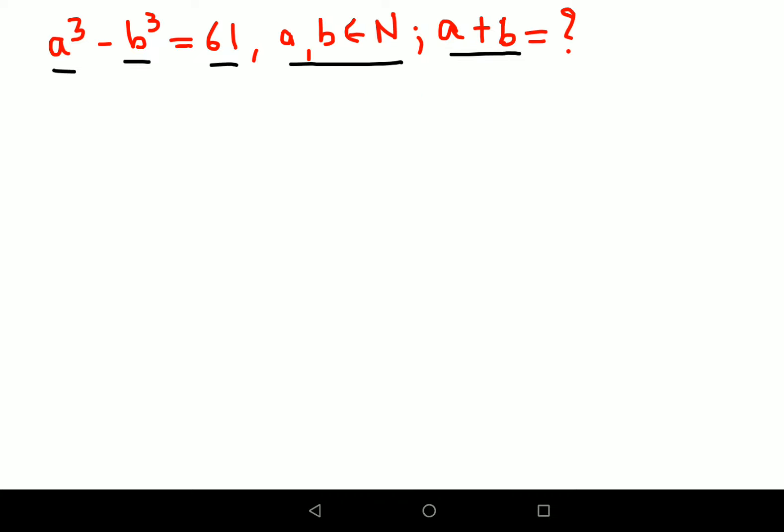So here let's try and do the expansion of a cube minus b cube. I can say a minus b the whole gets multiplied to a square plus ab plus b square equals to 61. That's it.